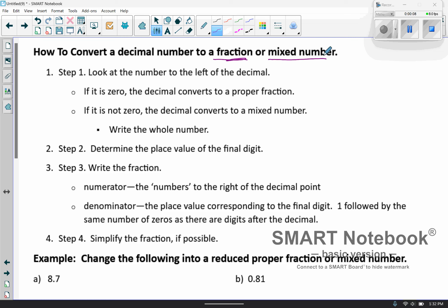So step one, we're going to look at the number to the left of the decimal. If it is a zero, then the decimal can convert to a proper fraction. If it is not zero, then the decimal will convert to a mixed number. We'll see examples of both types in a moment. If you do have the whole number, you'll go ahead and write it, and then after that, the steps will be the same.